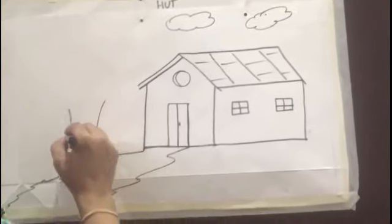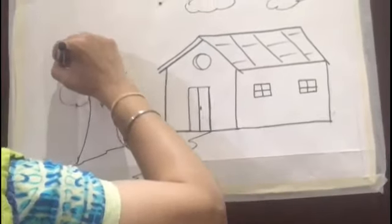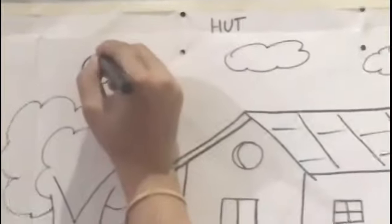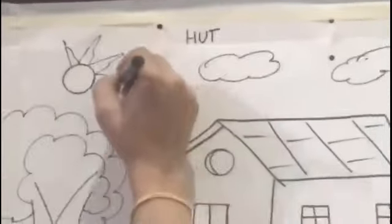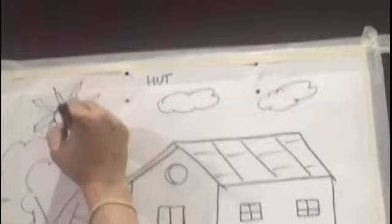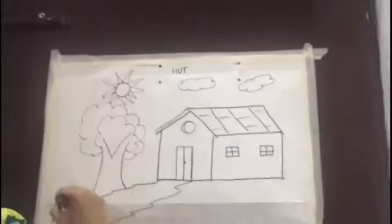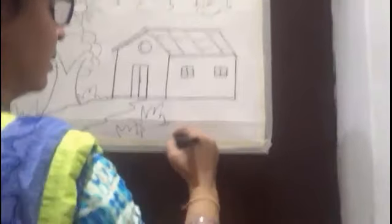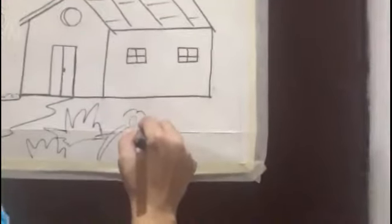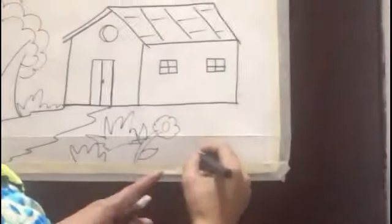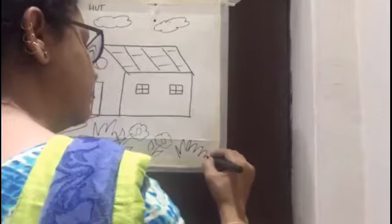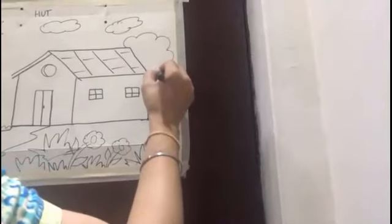Then we'll do a big tree, and those who are interested, draw your grasses — now complete your grass here also. Draw your flowers. Now you have completed, and one more tree here.